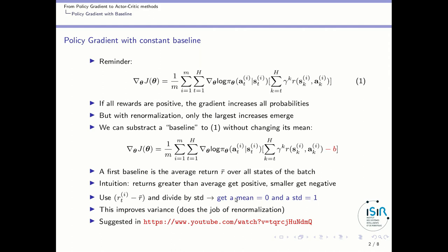Which is a nice conditioning to get a smaller variance. So doing this does the job of probability renormalization, and this is suggested in another DeepRL bootcamp video, which is pointed here.